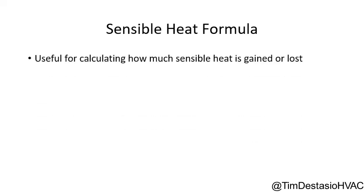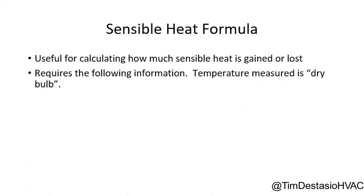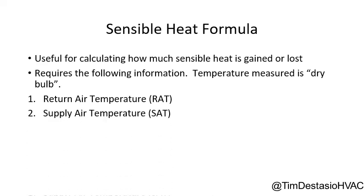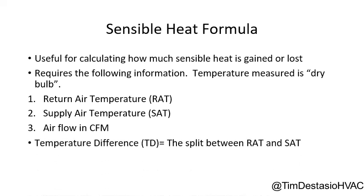The sensible heat formula is useful for calculating how much sensible heat is gained or lost. In a heating system, we are gaining heat — adding heat to the space. When talking about cooling or air conditioning, we're talking about losing heat, so it would be a sensible heat loss. To calculate sensible heat, we need to measure dry bulb temperature — specifically our return air and supply air dry bulb temperatures — and also measure and calculate our CFM, or airflow. The temperature difference, or split, between return air and supply air temperature is what we're actively interested in.